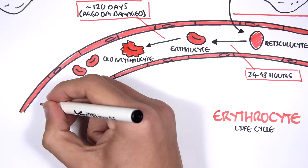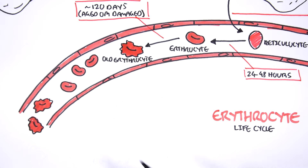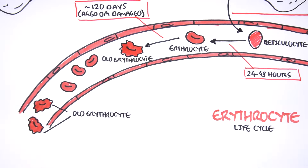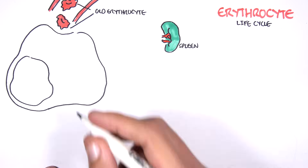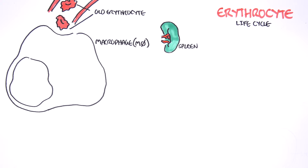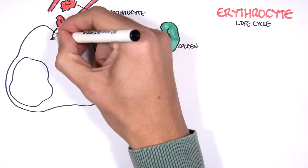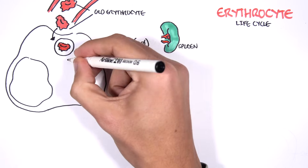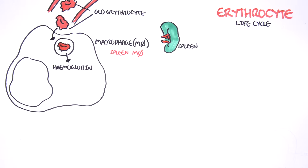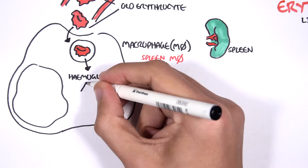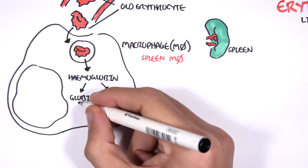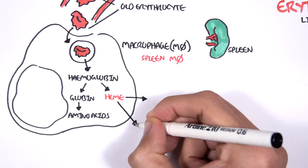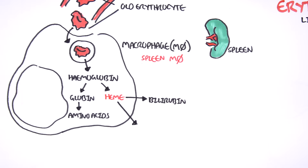Here I'm drawing a few old red blood cells that need to be cleared out, and here I'm drawing the spleen. Within the spleen we have macrophages, and it is these macrophages that will engulf these old erythrocytes and break them down. When the old red blood cells are broken down, you end up with a lot of hemoglobin. The hemoglobin can then be broken down further into globin and its heme component. Globin is broken down to amino acids, and the heme is broken down to two main products: bilirubin and iron.